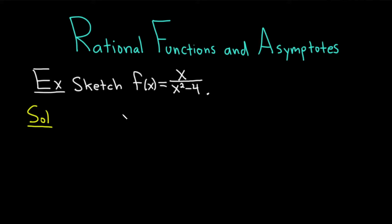So to graph rational functions, you have to find all of the intercepts and asymptotes, and then plot points if you still need some extra help. This one is going to require a little bit more work. Let's start by finding the y-intercept.